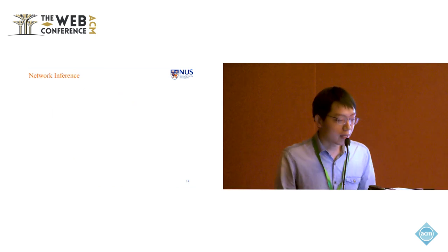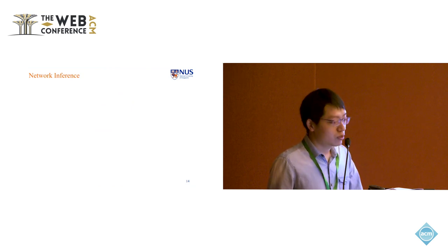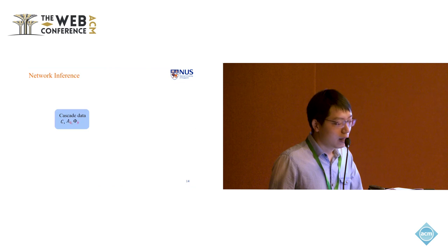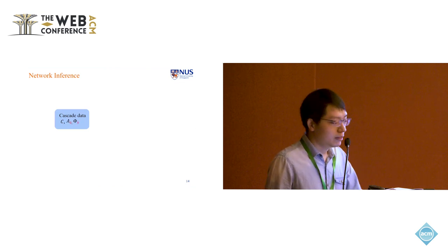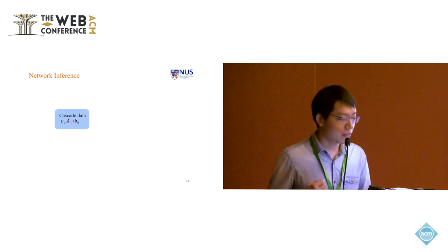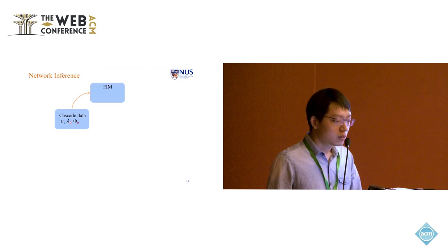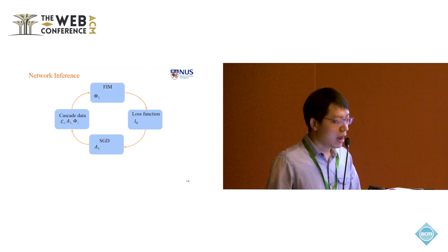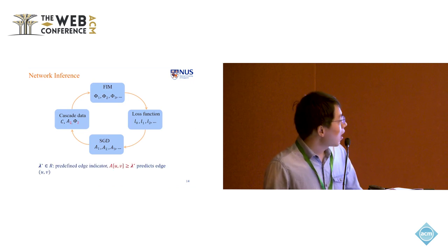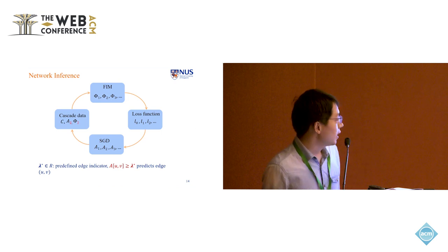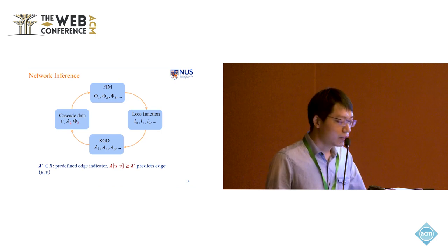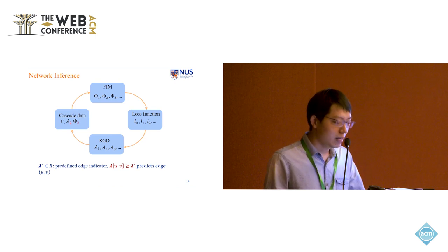Now, I demonstrate how the network inference is done based on our framework FIM. Here we give a bunch of cascade C. And then we initialize the adjacent matrix A0 and phi 0. Phi 0 here is the node that infected at time 0. That would be the source node. So FIM framework would calculate the phi 1 based on A0 and phi 0. And then we calculate the corresponding loss and then SGD would update the A0 to A1. And then based on A1 and phi 1, we can calculate phi 2 and so on and so forth until the training is done. And after it's done, we will return the estimated A. Here we would predefine an edge indicator lambda star. Such that if the estimated elements AUV are no smaller than lambda star, it will predict the existence of an edge.